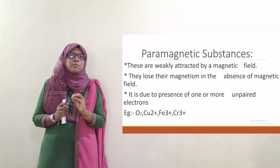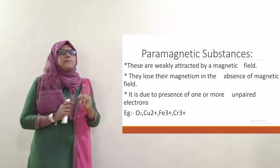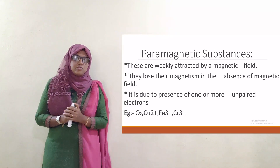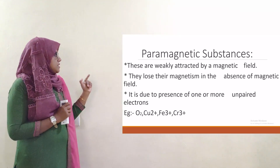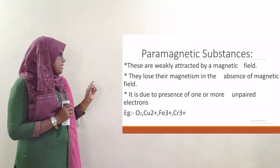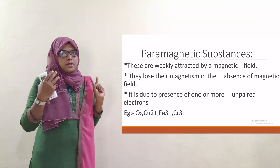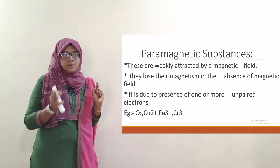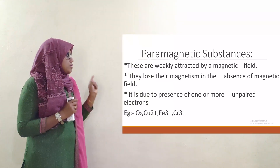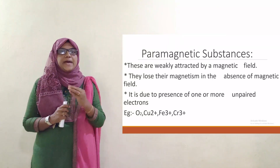It is due to the presence of one or more unpaired electrons. Examples of paramagnetic substances include O2, whose paramagnetic nature is confirmed by its molecular orbital configuration.